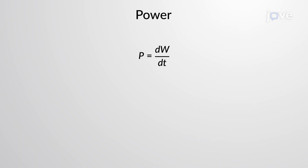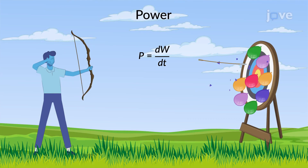Power measures the rate at which work is done. The SI unit of power is the watt, defined as one joule of work done in one second. Recall that work is the transfer of energy, therefore power can also be represented as the rate of transfer of energy.